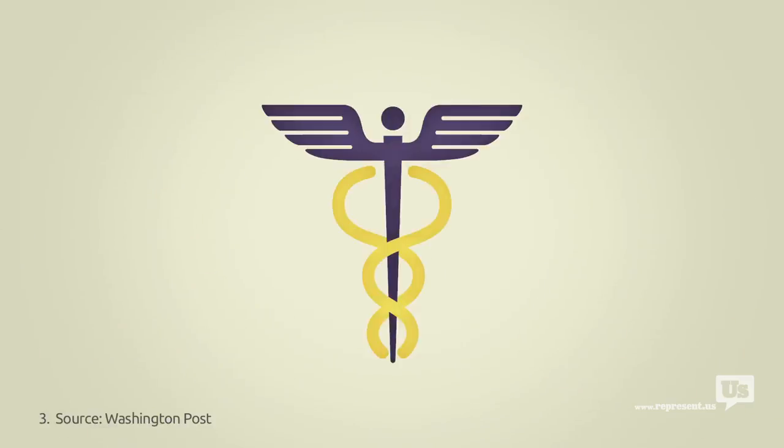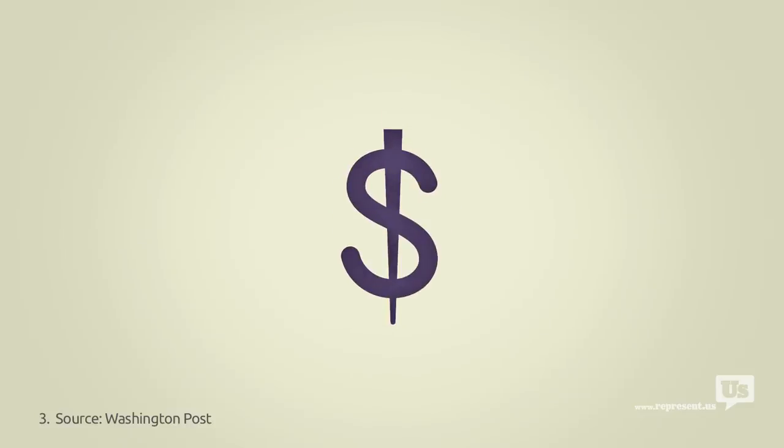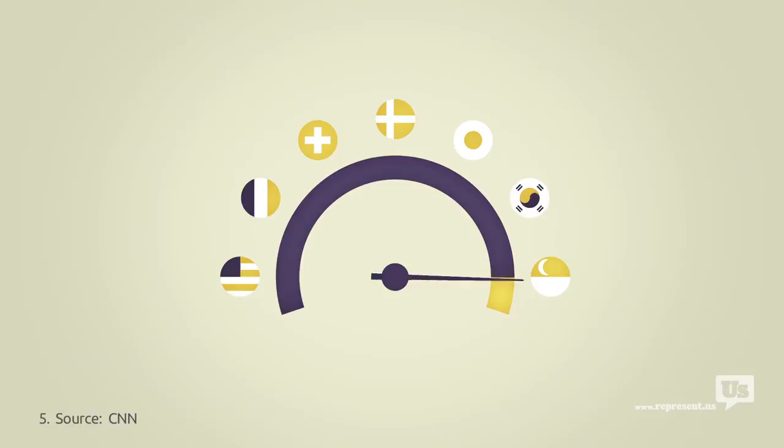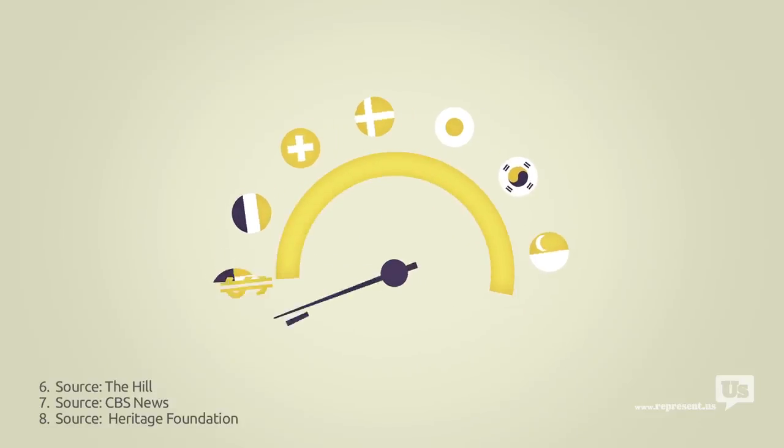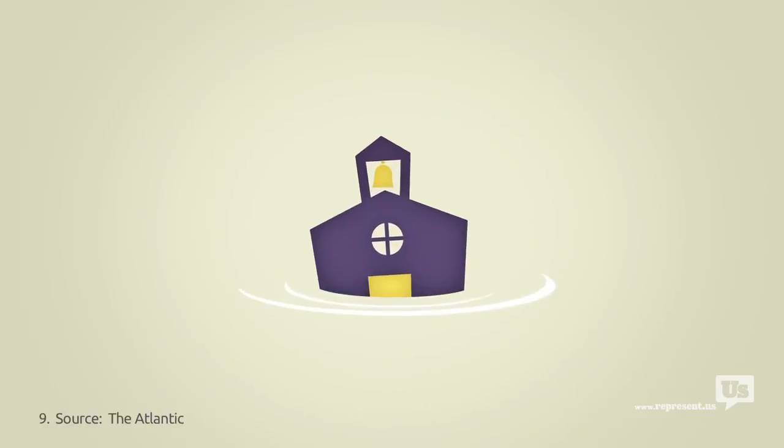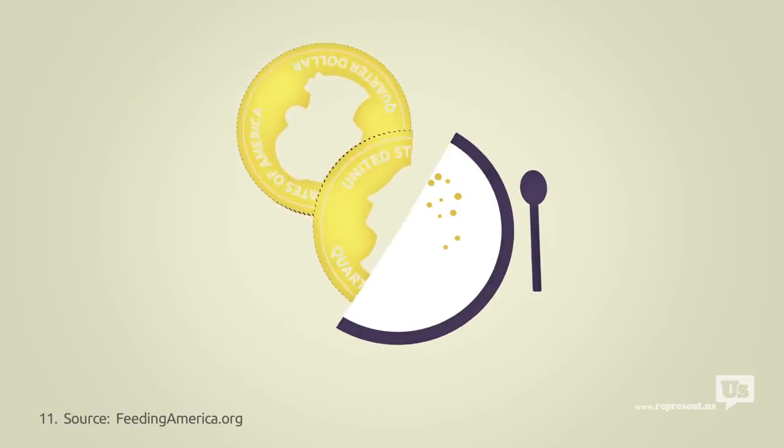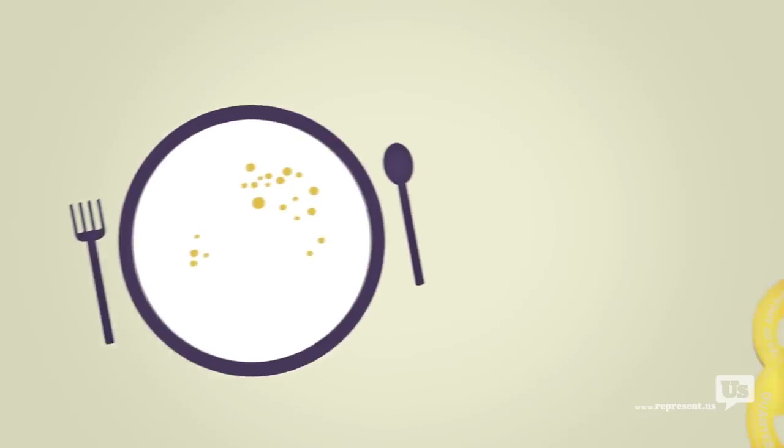We pay for it, with the most expensive healthcare in the world. We pay for it with a tax code that's a complete mess. We pay for it with internet that's slower and more expensive, with wasteful spending, a floundering education system, a catastrophic drug war, and one in five American children born into poverty. Almost every major issue we face as a nation can be traced back to this graph.